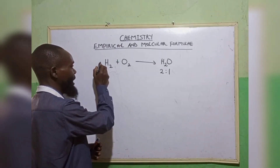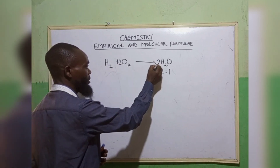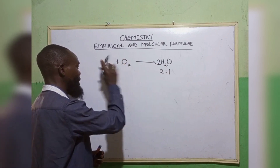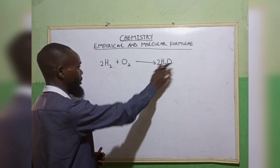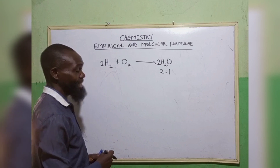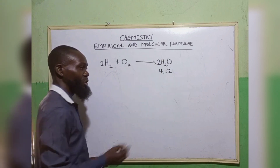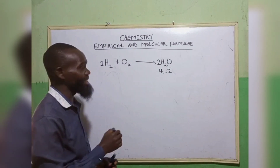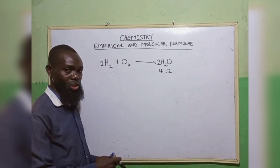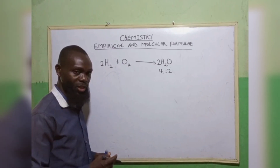But let us assume we want to balance this equation. Let me put 2 here, 2 here, then 2 here. Then hydrogen is 4, oxygen is 2. From here, you can see that our hydrogen has increased to 4, our oxygen has increased to 2. The one we did initially, that is the empirical formulae of that compound, while this one is the actual ratio in the reaction of the chemical equation, which is called the molecular formulae.